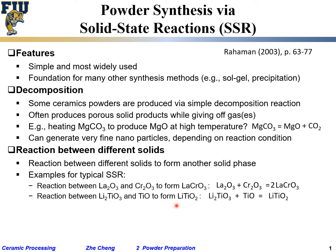To balance the lithium titanium oxide reaction, multiply the right side by two. Left side: two lithium, two on the right. Left side: one plus one equals two titanium, two on the right. Left side: three plus one equals four oxygen; right side: two times two equals four. Balanced. That's middle school chemistry — you cannot be afraid of this when doing synthesis.